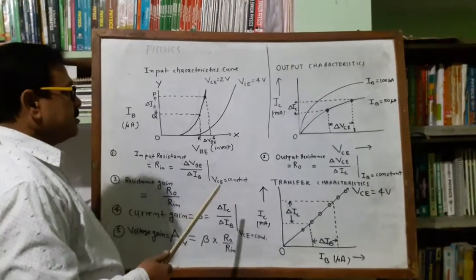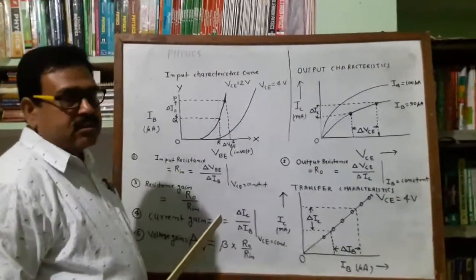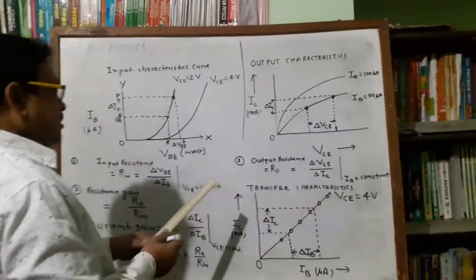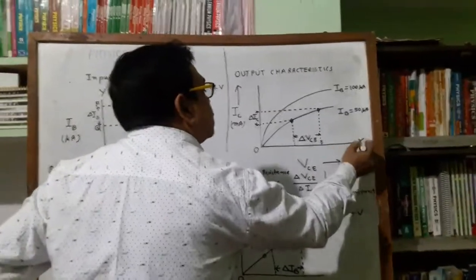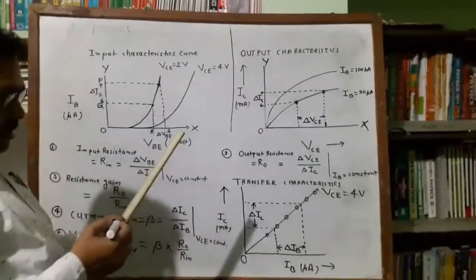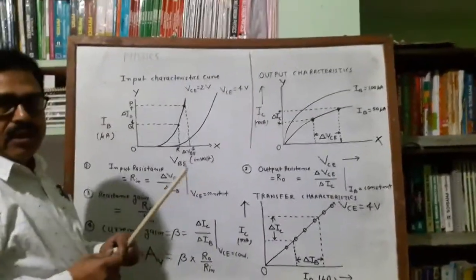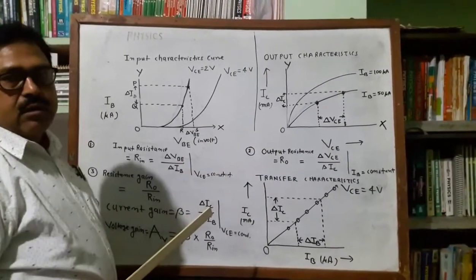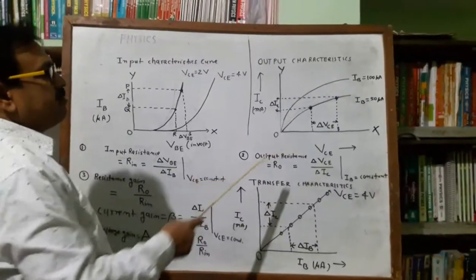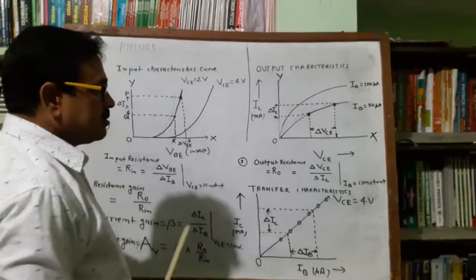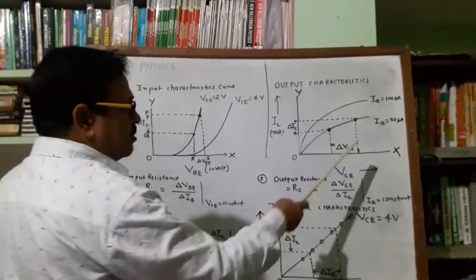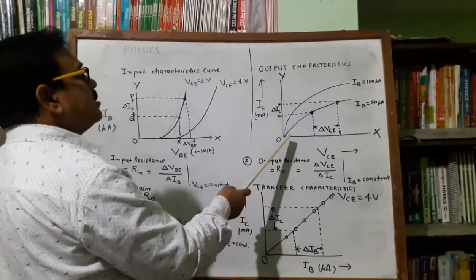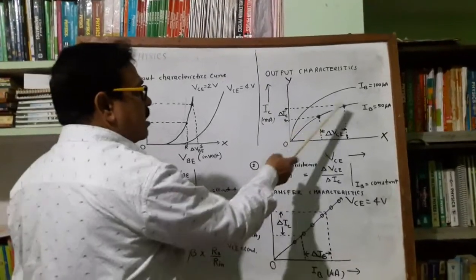Now we draw the output characteristics. For output characteristics, we once again take the x-axis for the collector-to-emitter voltage and the y-axis for collector current. With the help of the milliammeter, we note down the values of the collector current and locate them on the y-axis scale, while collector-to-emitter voltage is marked on the x-axis. It is seen that for a fixed base current of 50 microamperes, the collector voltage and collector current give a curve line.